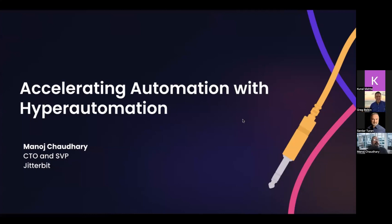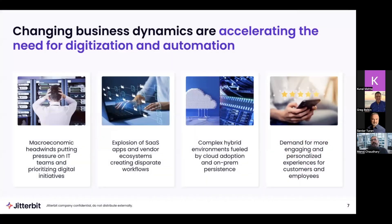Thank you very much, Greg. What I'm going to talk about is accelerating automation with hyper-automation. I'll cover: what is hyper-automation, why you need hyper-automation, what are the challenges in adopting hyper-automation, and how Jitterbit helps with those challenges and enables hyper-automation initiatives. But before I talk about those, let's look at what the business dynamics are. So — changing business dynamics. What are these? These are the key four things which are causing companies to do digitization and automation.